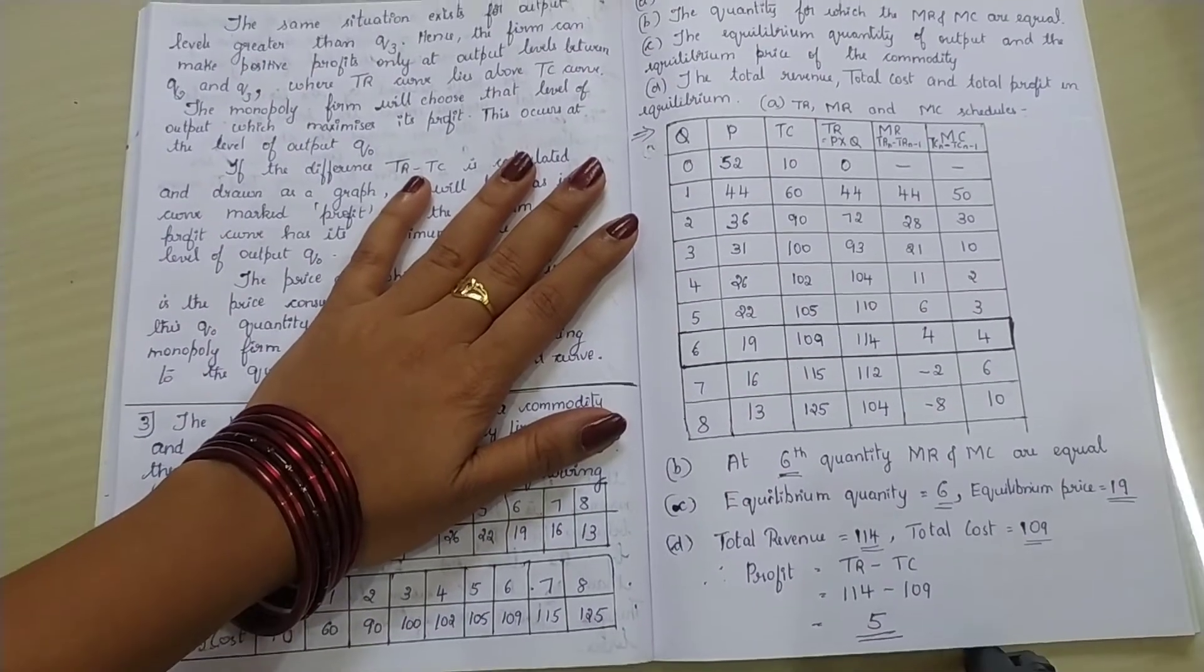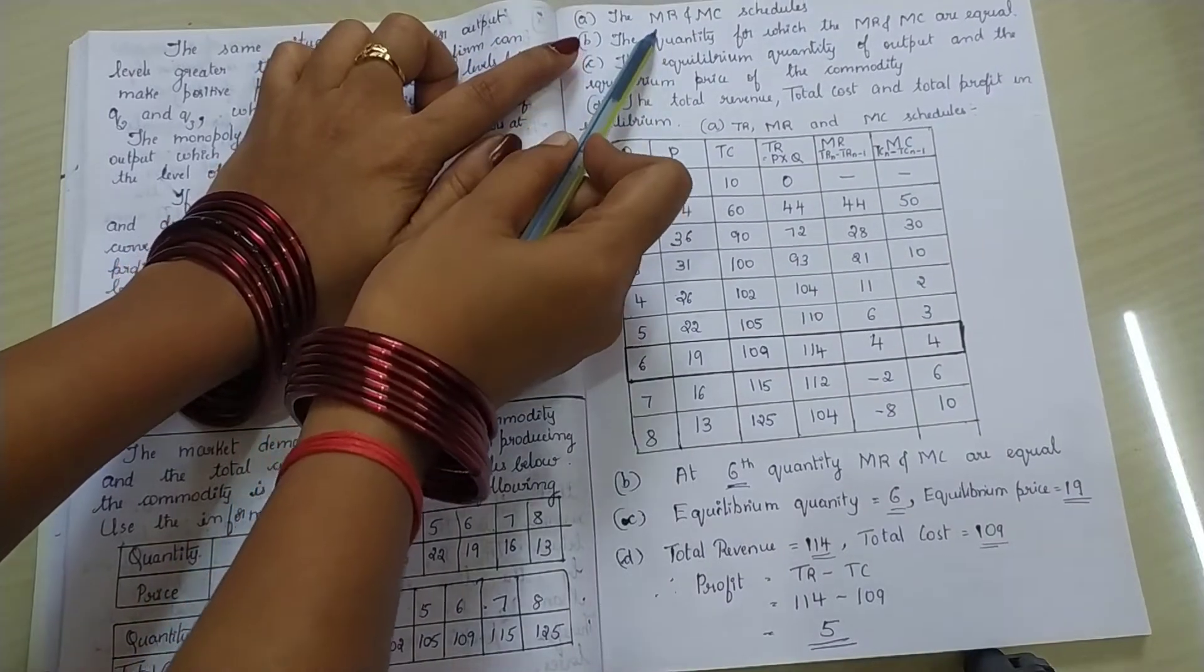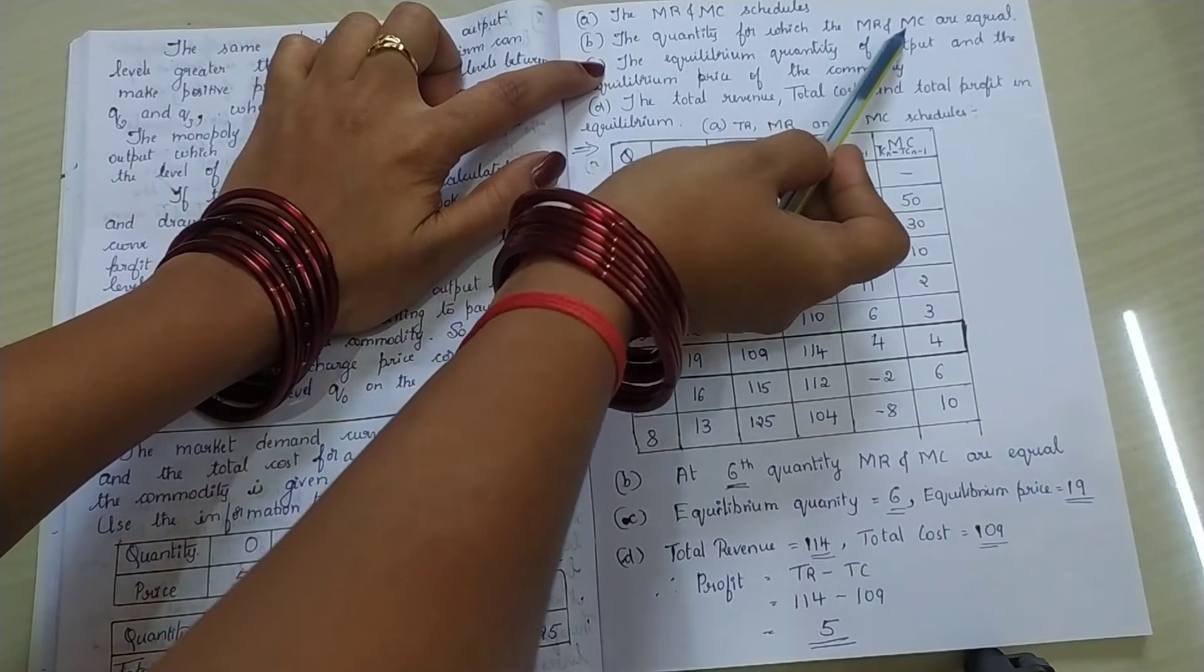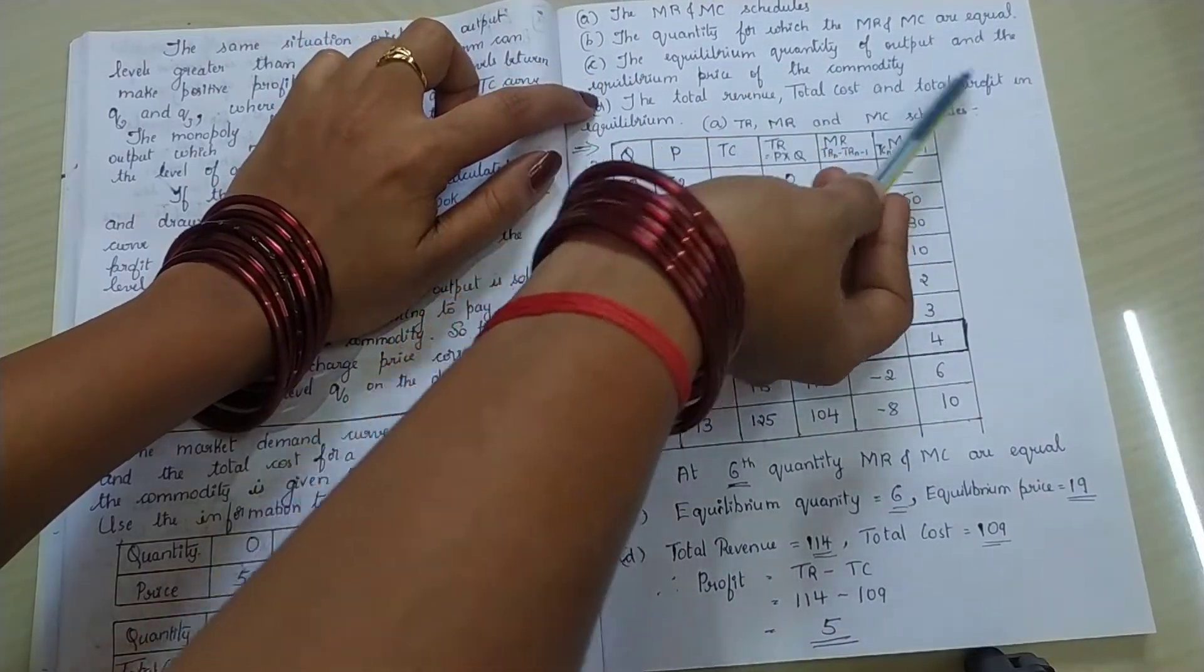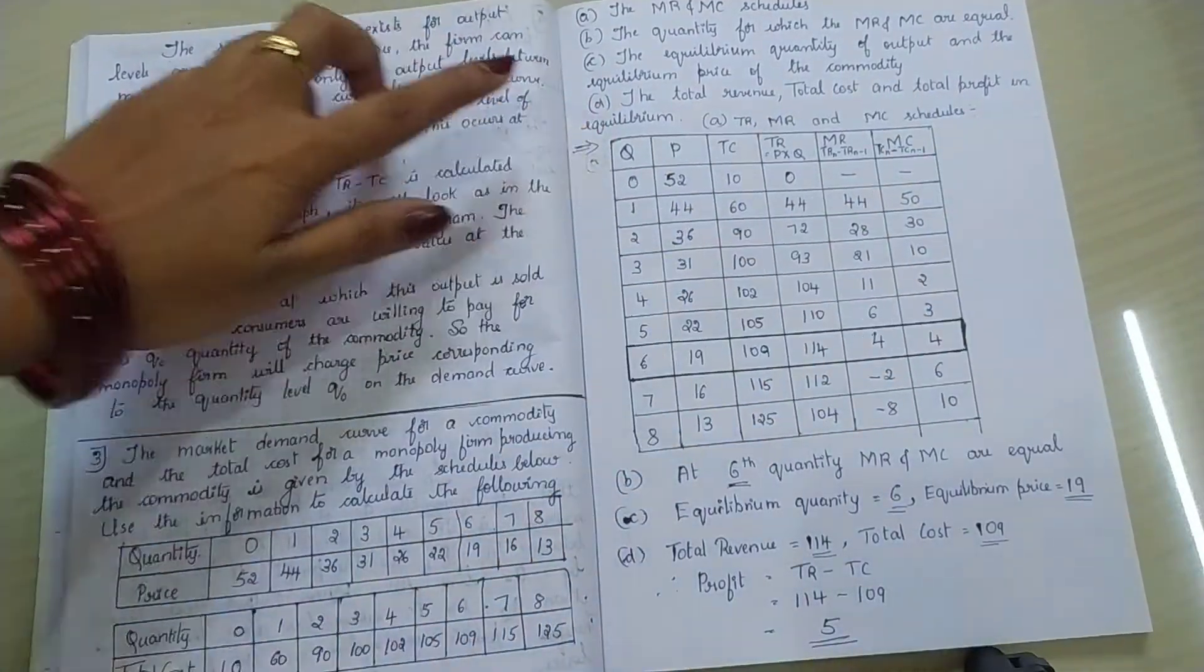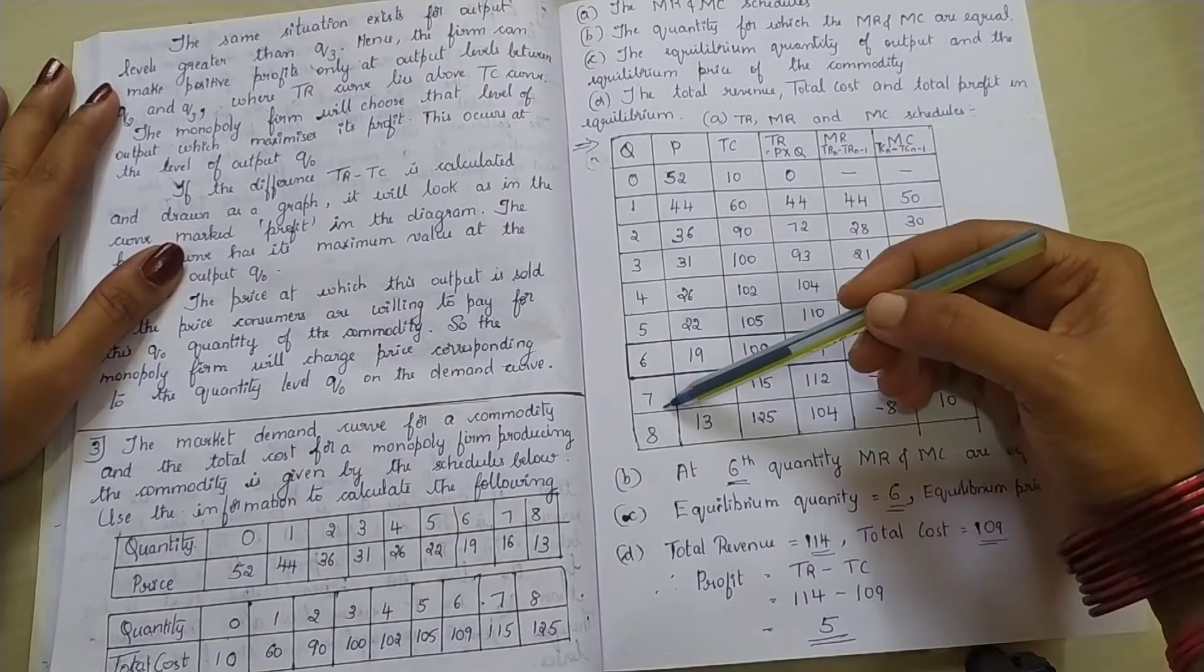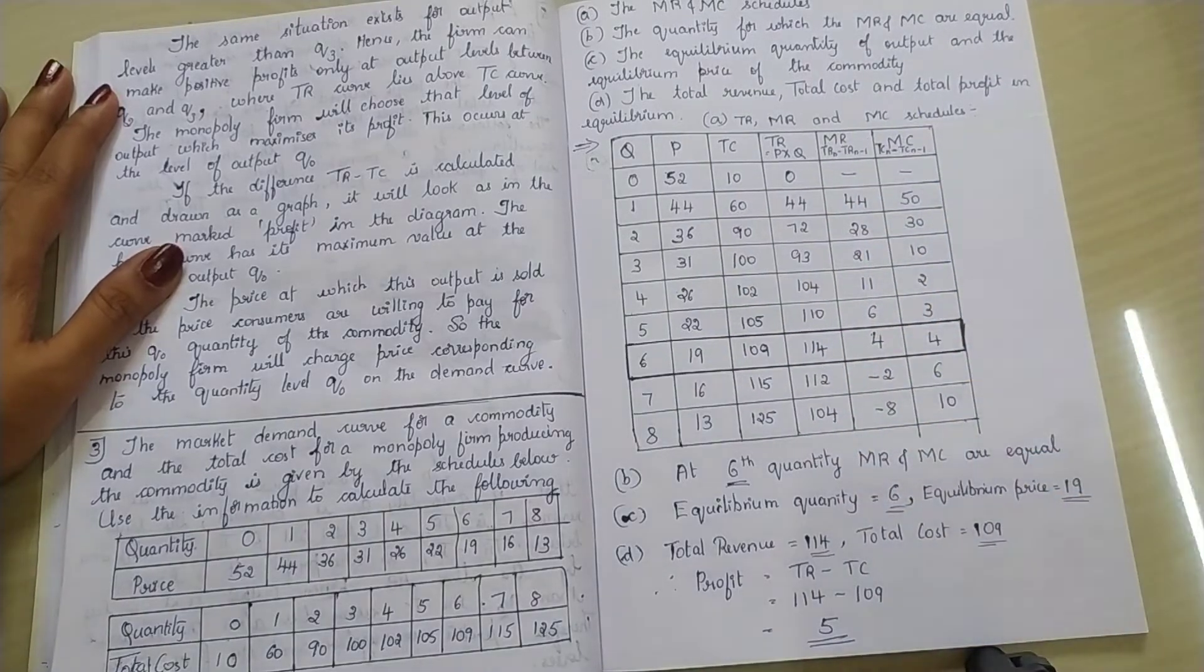Now, we have to calculate the MR and MC schedules - marginal revenue and marginal cost. Second, the quantity for which the MR and MC are equal. Third, the equilibrium quantity of output and the equilibrium price of the commodity. Fourth, the total revenue, total cost and total profit in the equilibrium. Now, how to solve this particular question? First of all, we need to draw this table.